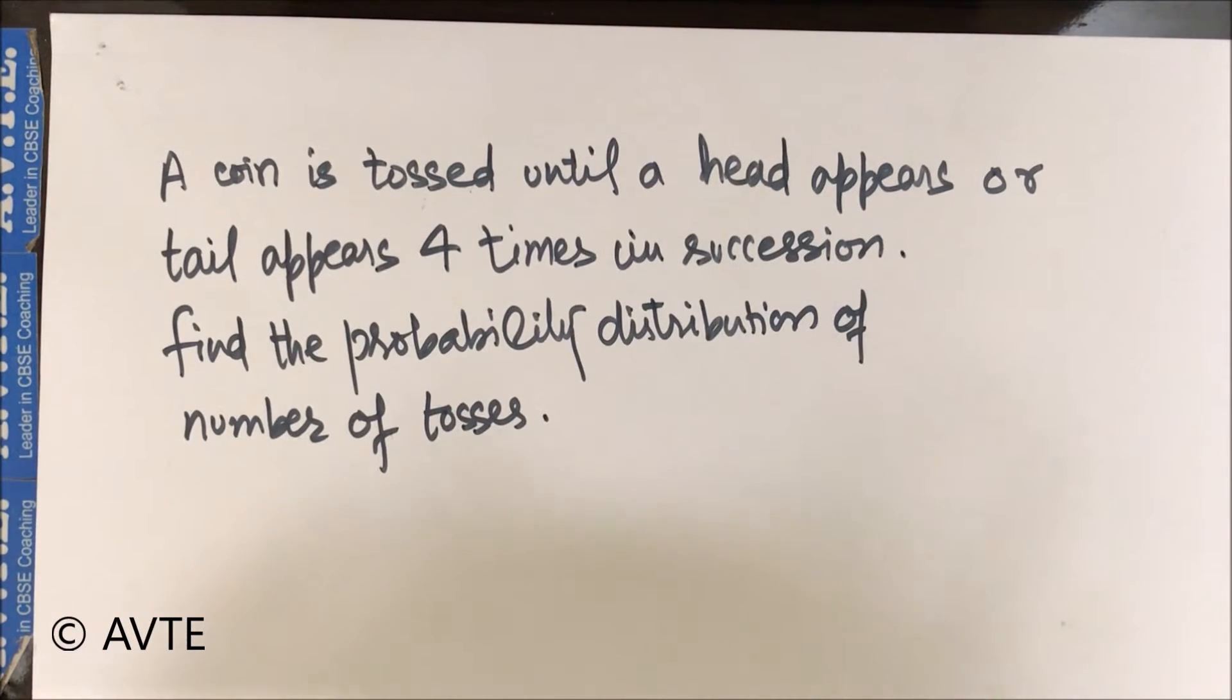Read the question again. A coin is tossed until a head appears. That is, as soon as we see head, we quit or we stop, or tail appears four times in succession. Find the probability distribution of number of tosses. Now this is a good question. Think and we are coming up with the solution.